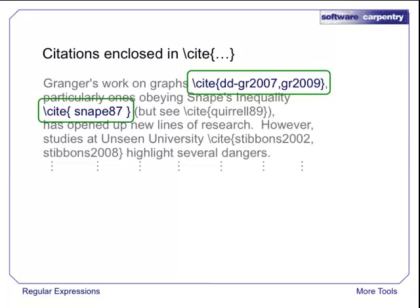Let's have a closer look at our input. In LaTeX, citations are written using backslash cite, with cross-reference labels in curly braces.